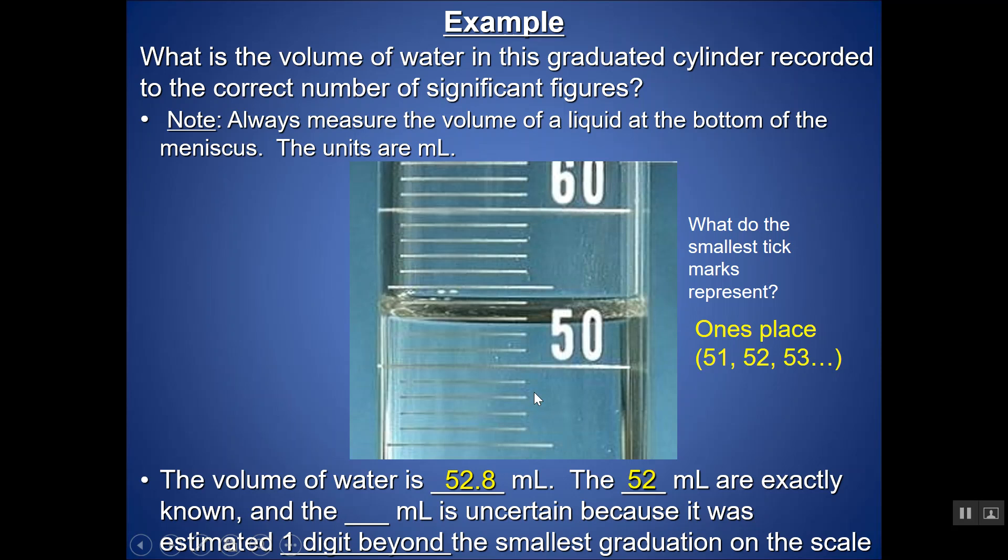Essentially in this case, the 52 milliliters are known exactly because this scale goes all the way up to the ones places. Again, this is 51, 52, 53. So I know the 52 is exact. I'm estimating the next digit, the .8 part of it. It's estimated one digit beyond the smallest graduation on the scale.